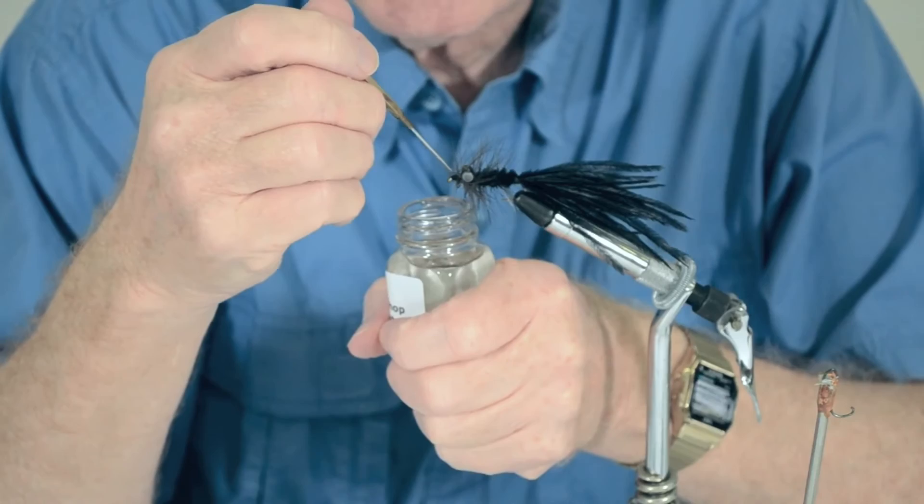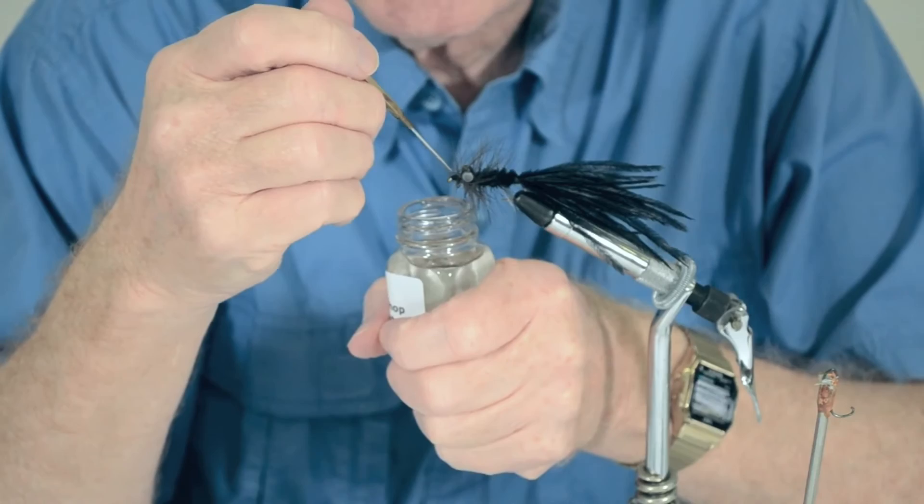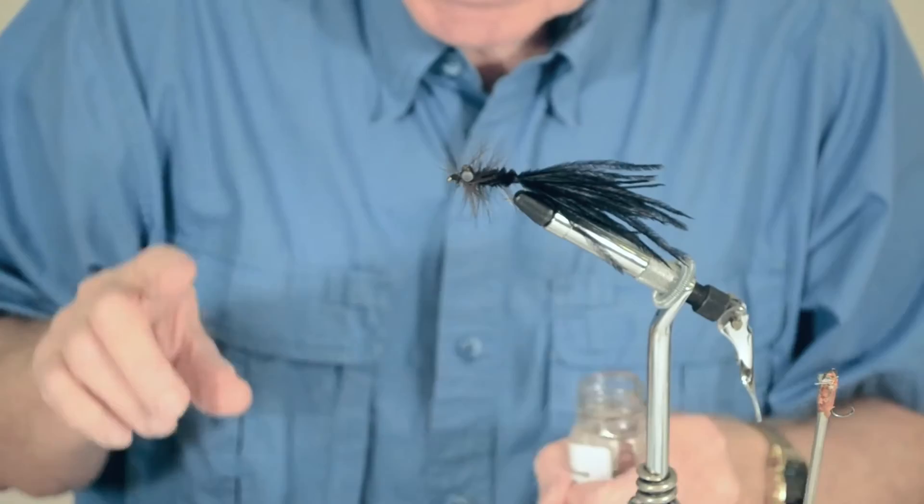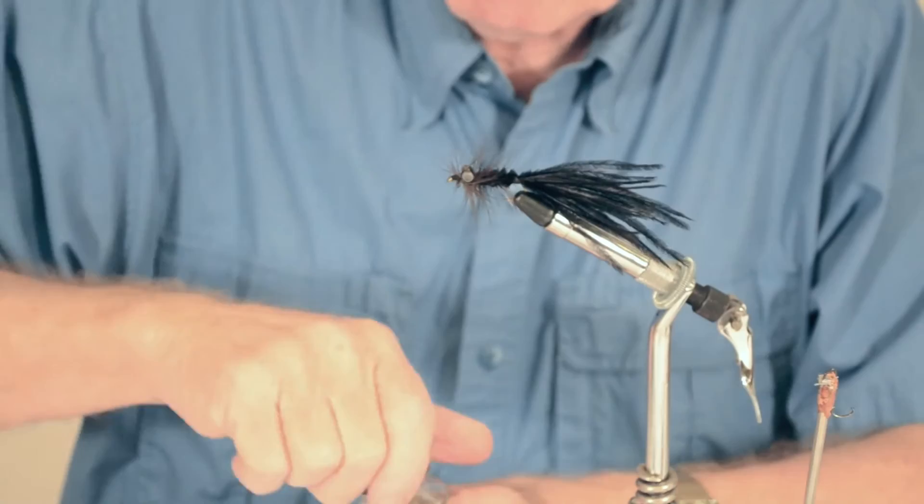Just put some of this head cement right on the head. And as I say, there's no reason in the world that wouldn't catch 100 or 200 bass. We do it in size 8, 6, 4. Size 6 is probably our most popular. It's a 2X long.